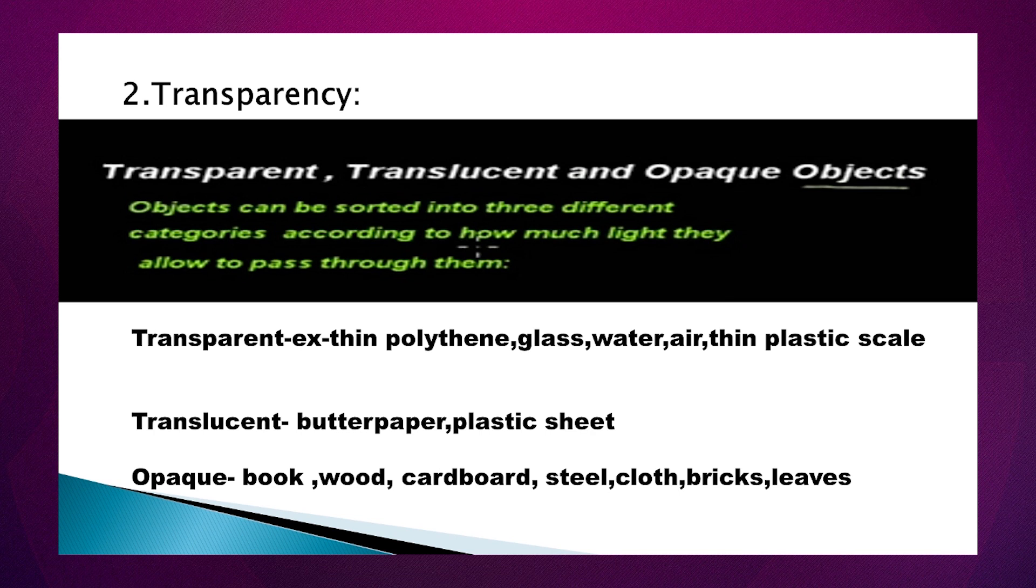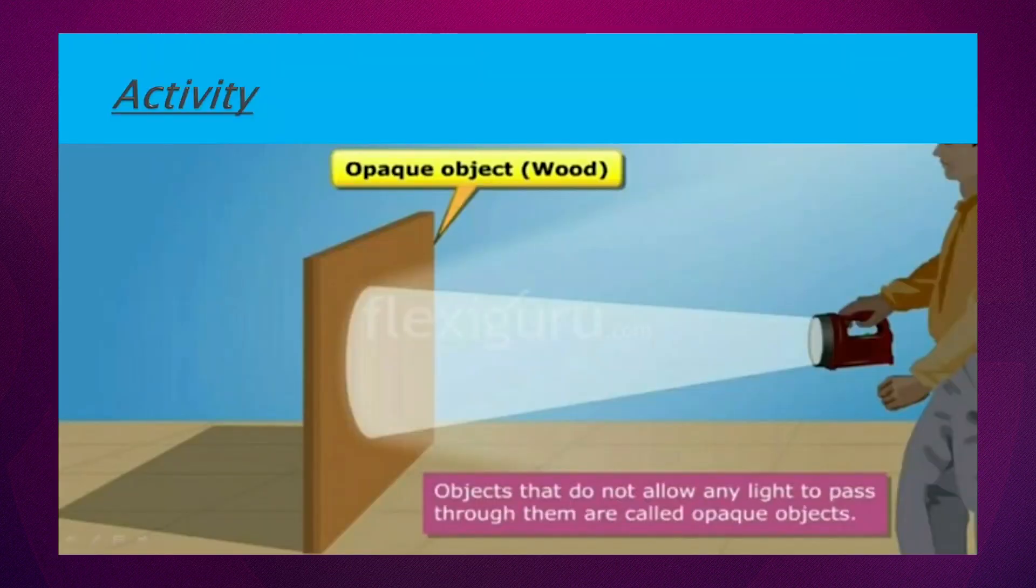The second property we are going to talk about is transparency, which can be in any way - how much light passes on that basis we classify things. The first thing they have shown is the wooden block. Wooden block ke under se light aap pass nahi kar sakte, us ke aar par nahi ja sakte. This type of objects which do not allow light to pass through them are known as opaque objects.